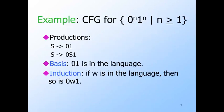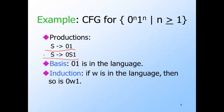For our first example, let's consider the language we showed not to be a regular language — the set of strings of the form n zeros followed by the same number of ones. Here is a grammar for this language. There are two productions and only one variable S. The first production is a basis rule — it says that the string 01 is in the language of S. The second is an inductive rule — it says that if W is a string in the language of S, then 0W1 is also in the language. That rule lets us build longer and longer strings, at each step adding one zero to the beginning and one one to the end, so we always have the same number of zeros and ones with the zeros preceding the ones.